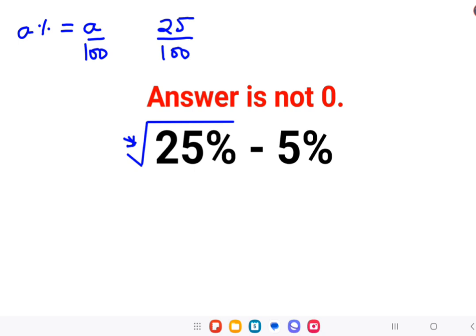please understand root 25%. This is where a lot of people made a mistake. 25% under a root is not equal to 5%. Now let's understand why.